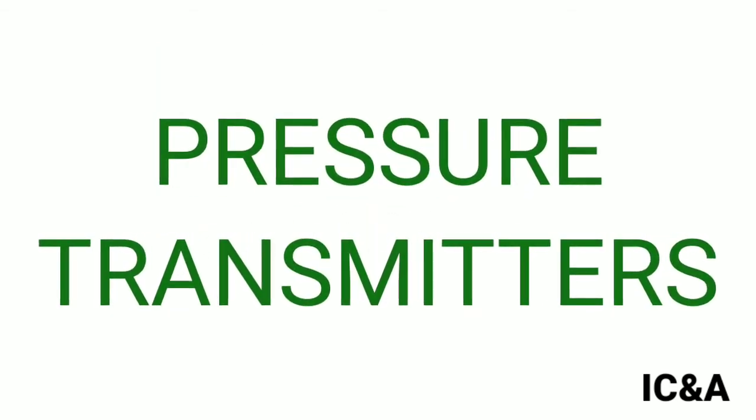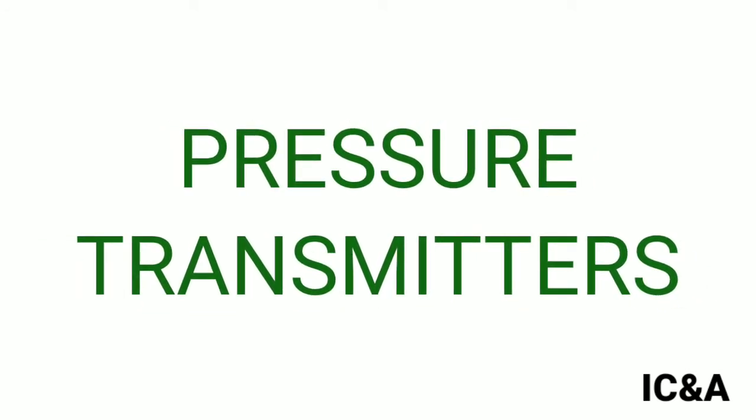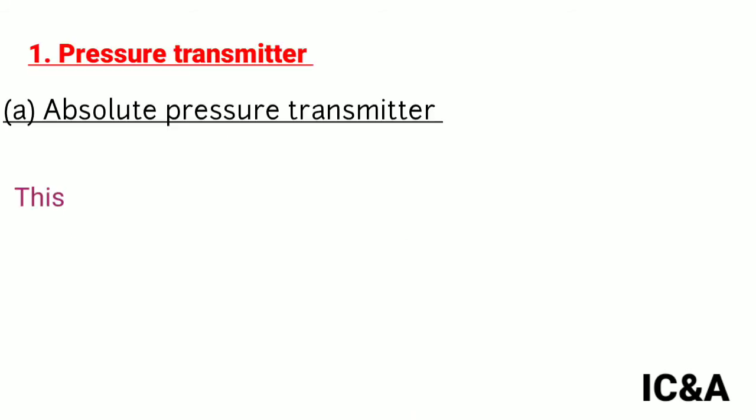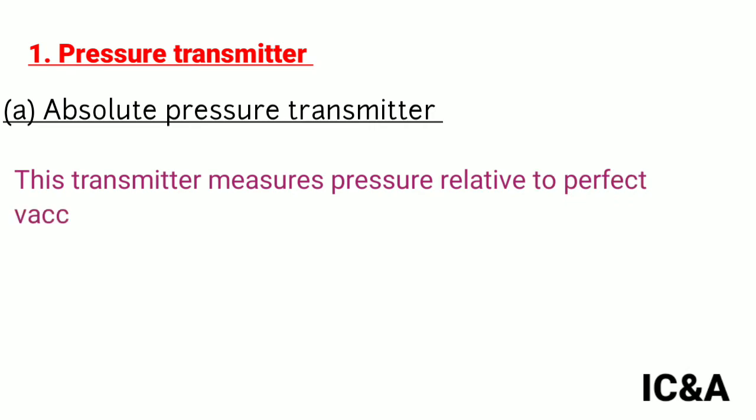First we are going to discuss about pressure transmitters, types of pressure transmitters. First one is absolute pressure transmitter. Absolute pressure transmitter measures pressure relative to perfect vacuum pressure.